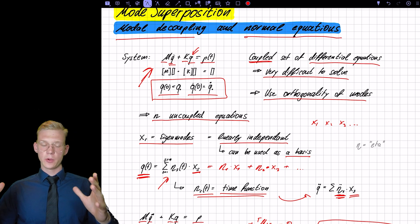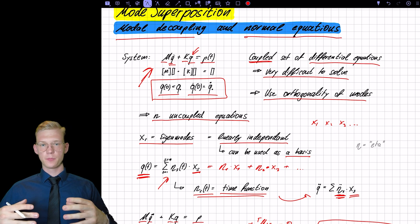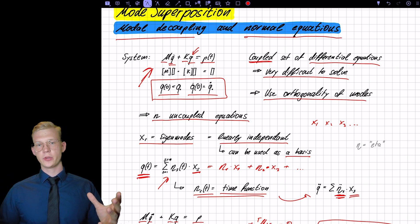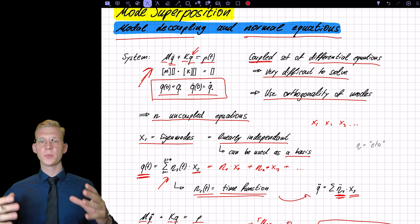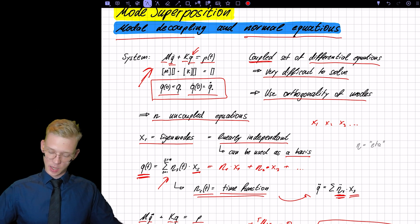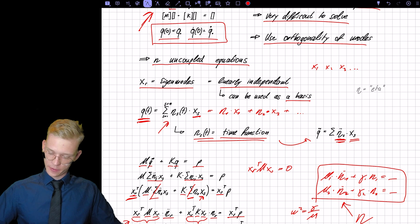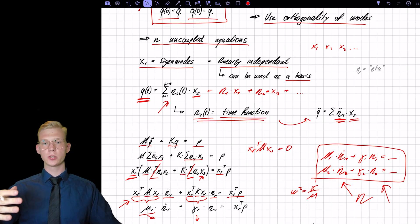So again, we simplify our system because solving all at once is very difficult. We know how we can exploit M and K orthogonality to get a set of N uncoupled equations. Here we have N uncoupled equations, solve them one by one, and then just add them back into our physical space and we will have the solution.